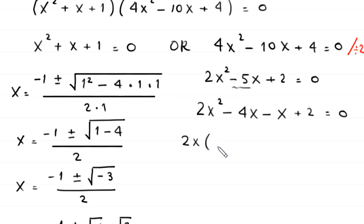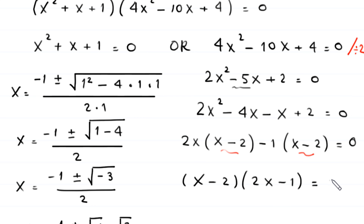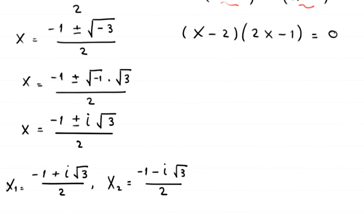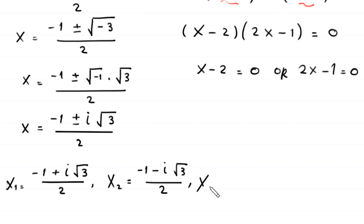We break −5x into −4x − x: 2x² − 4x − x + 2 = 0. Factoring: 2x(x − 2) − 1(x − 2) = 0. Since (x − 2) is a common factor, we get (x − 2)(2x − 1) = 0.